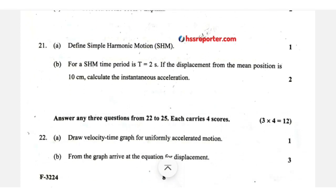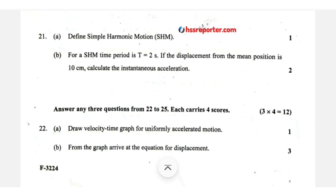Question number 21: simple harmonic motion. F equals minus kx (restoring force), and acceleration a is proportional to minus x. The instantaneous acceleration equation is a equals minus omega squared x. With omega squared equal to (2 pi over T) squared and T squared equal to 2, the 2 cancels, giving a equals pi squared into x. With x equal to 10 cm, acceleration equals 3.14 squared times 10, which is 9.86 times 10, approximately 98.6 cm/s².